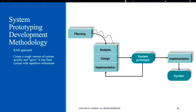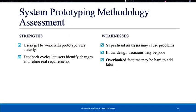In prototyping, analysis, design, and implementation are all collapsed into one phase. We go through several cycles to develop our prototype — first creating a rough version, then improving it and receiving feedback in each cycle to get to the system we want. The strengths of prototyping are that users get to work with the prototype very quickly and feedback cycles are short, helping refine requirements. However, the speed of each cycle may lead to superficial analysis and poorly thought-out design decisions, with cycles as short as one month.